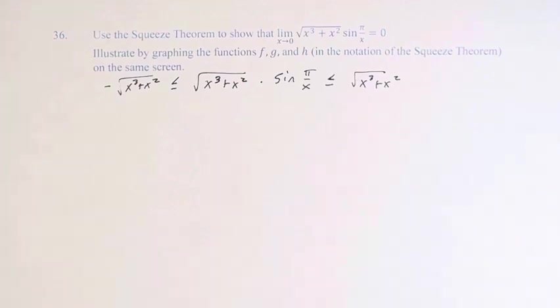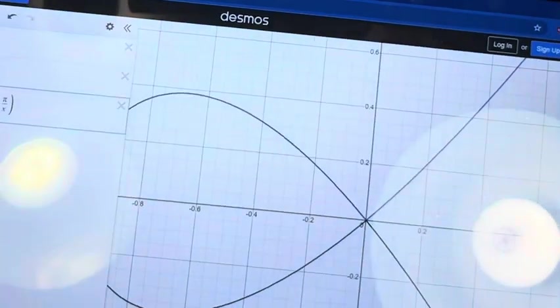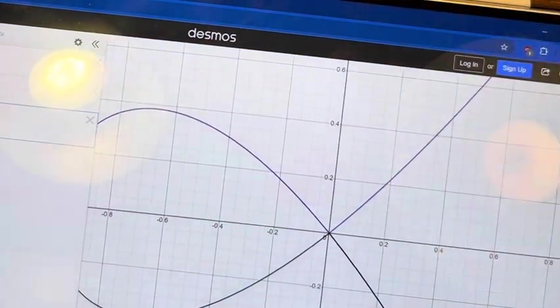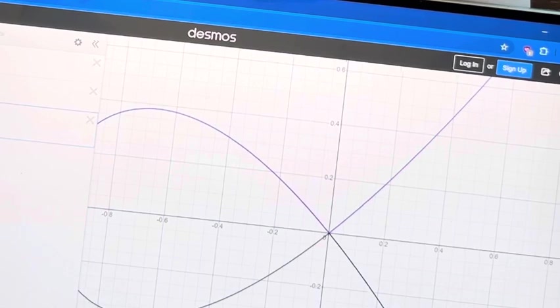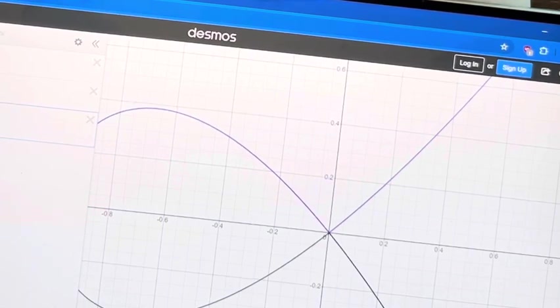Let's see a representation of that. We're asked to graph this. So if we have these functions, in purple we have the square root of x cubed plus x squared, and in black we have the negative square root of x cubed plus x squared.